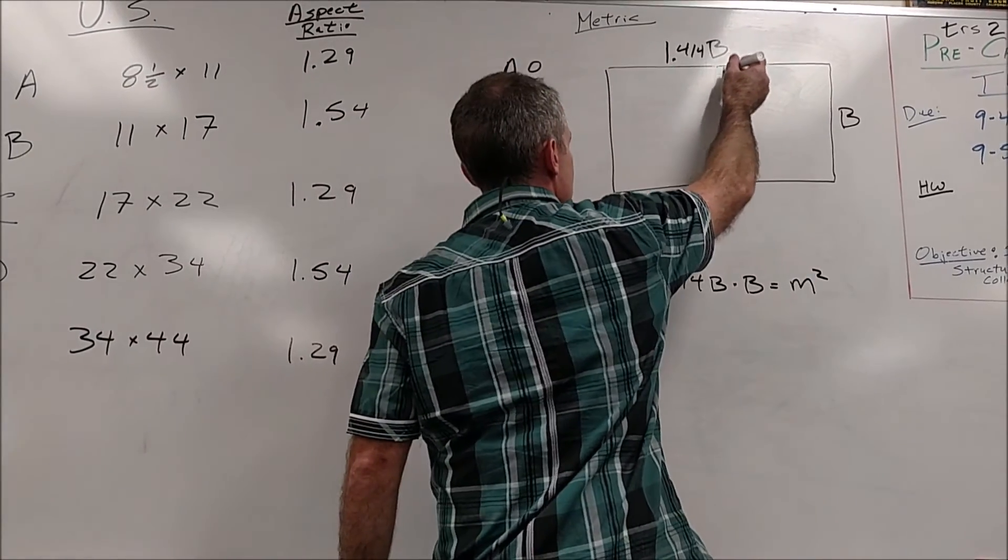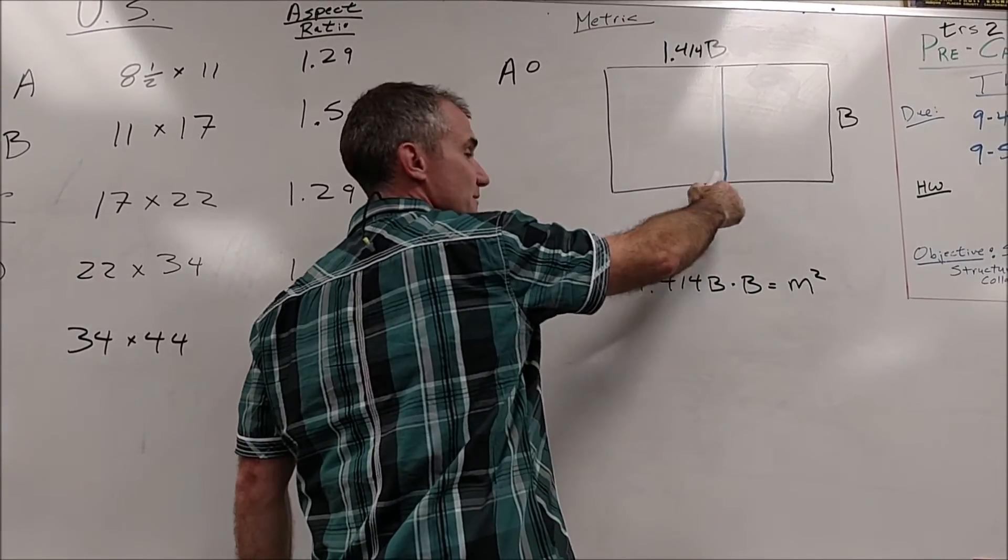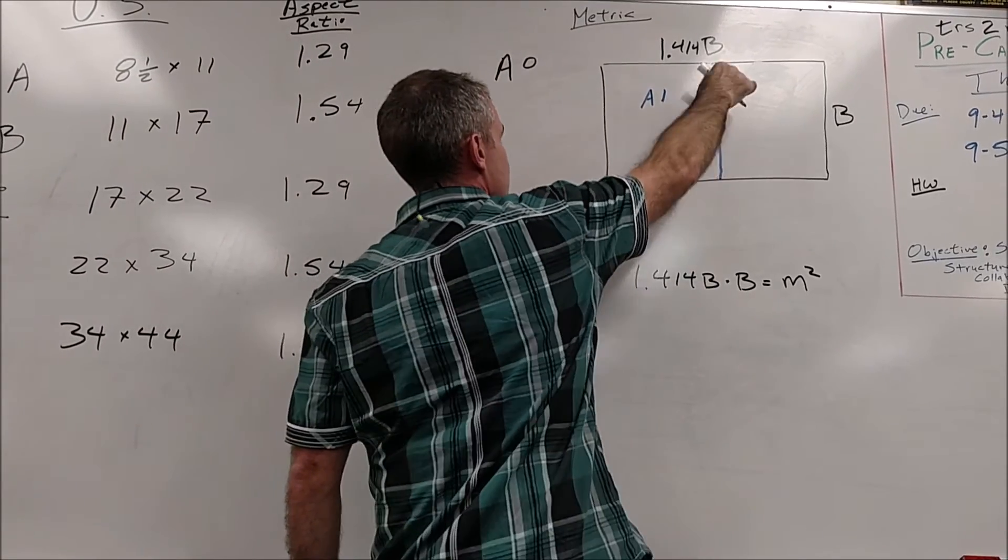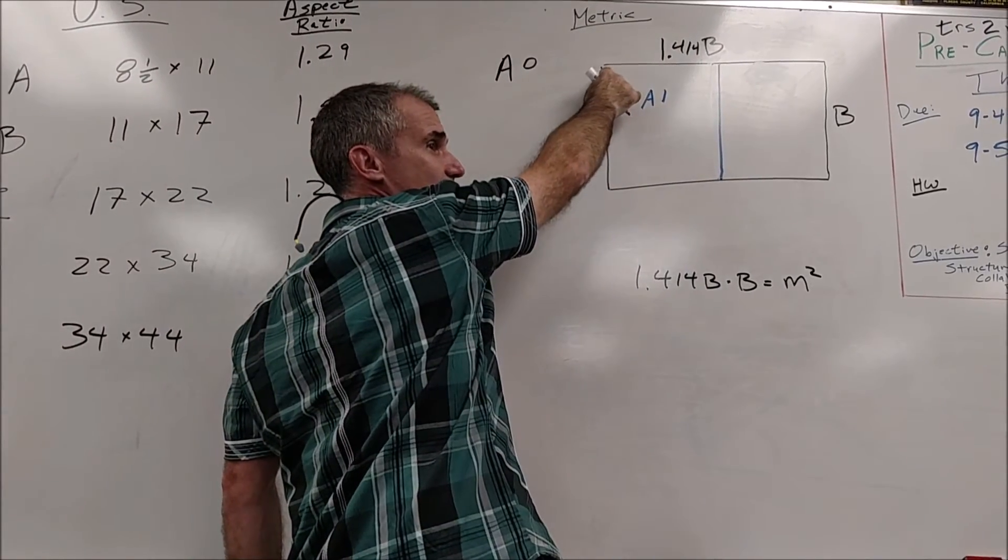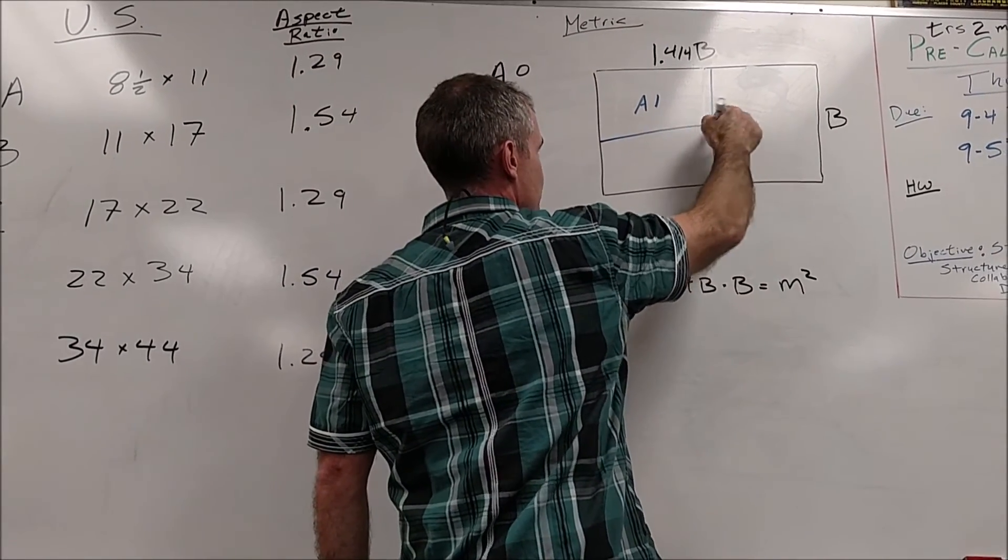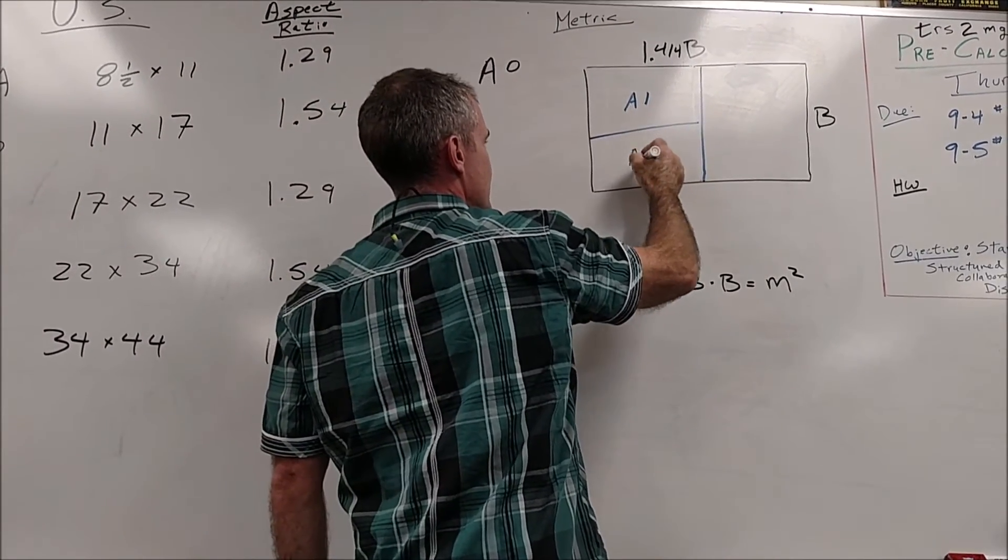If I cut it in half, the aspect ratio stays the same. This sheet of paper is now A1. But the ratio of this to this is 1.414 to 1, or root 2 to 1. If I cut this in half, the aspect ratio stays the same. This is A2.